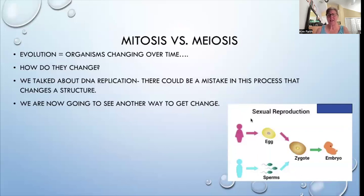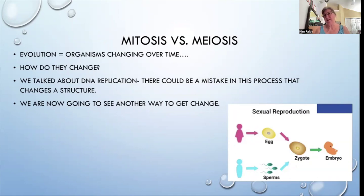In this picture, we can see how with sexual reproduction we need two individuals. One is going to provide an egg, the other the sperm. The sperm is going to fertilize the egg to form a zygote. A zygote is a fertilized egg, and that is going to further develop into an embryo.